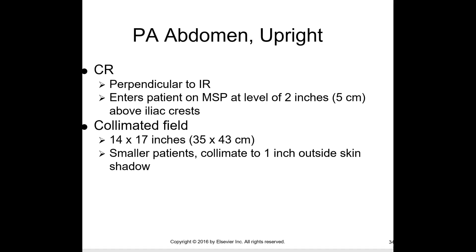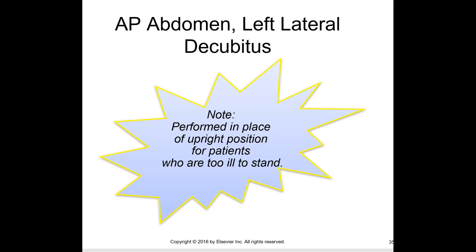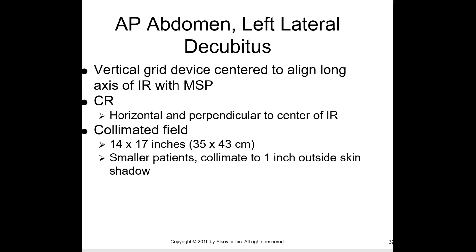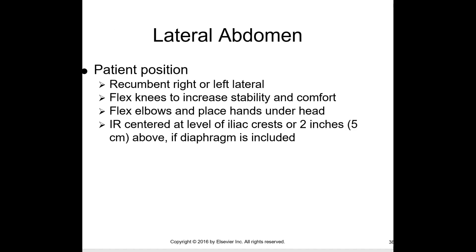The other view is the AP abdomen left lateral decubitus. This is done in place of the upright abdomen for patients who aren't able to stand. Patient position is recumbent left lateral on a radiolucent pad, arms above the level of the diaphragm, knees flexed lightly, and center the iliac crest to the IR — two inches above if the diaphragm is to be demonstrated. The vertical grid is centered to align the long axis of the IR with the MSP. The central ray is horizontal and perpendicular to the center of the IR.